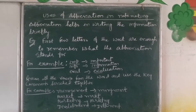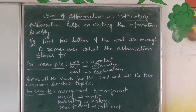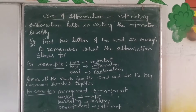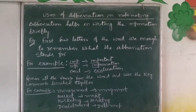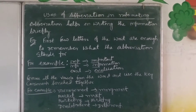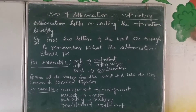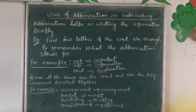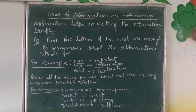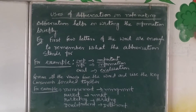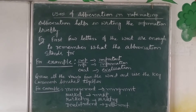If you want to write 'evaluation,' you can write EVAL. It is a short form that you can use. As we can see here, all the words we have written — like important, information, evaluation — are starting with a vowel. So we should not remove the vowel from the beginning of these words.